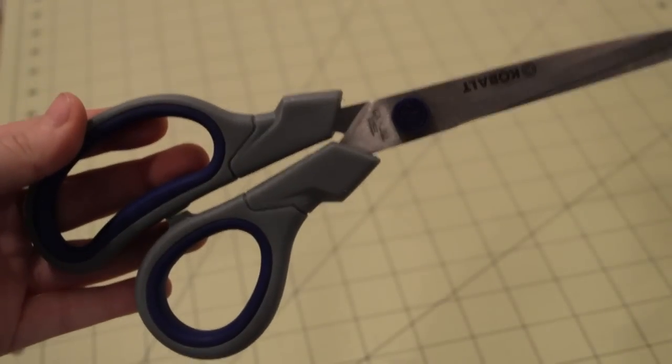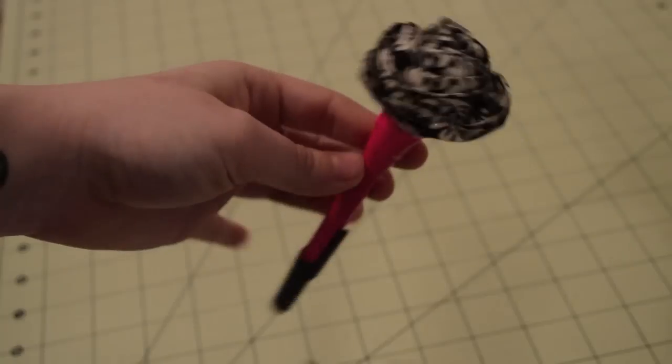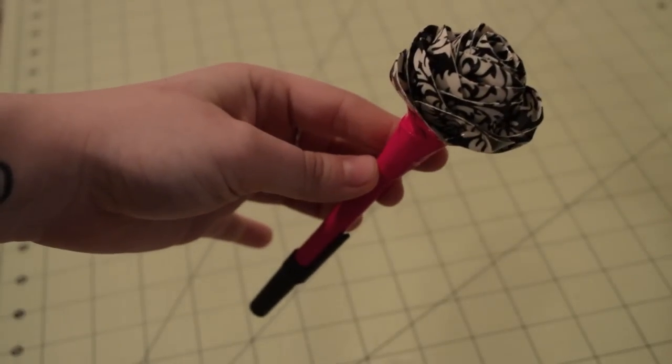Materials you'll need are scissors or an exacto knife, a pen or pencil. I'm using this duct tape rounded rose pen that I made.